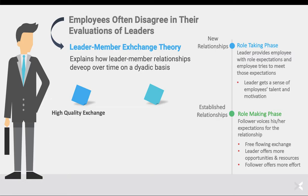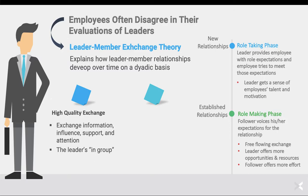The first are called high-quality exchange relationships — when the leader and followers exchange information, influence, support, and attention. They're both invested in one another, sharing insights and information. If a problem were to arise, the employee would take it to their leader; if the leader was aware of changes coming, they would share it with followers. Individuals included in high-quality exchange relationships are considered part of the leader's in-group — those in the circle of the leader that have strong relationships with that leader. Generally, these relationships are based on mutual trust, respect, and obligation.